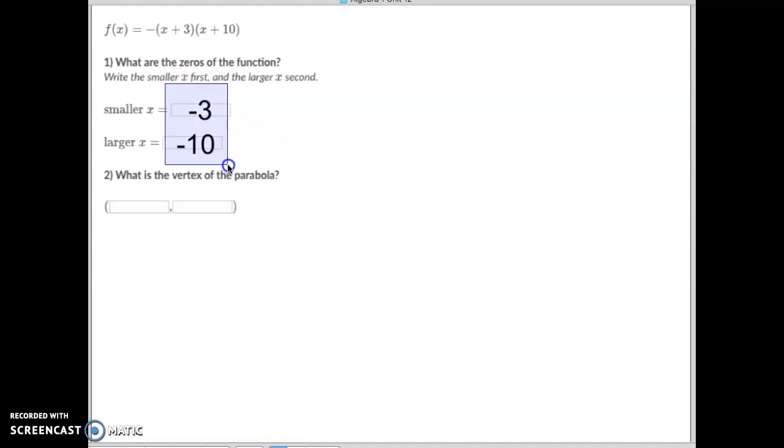By the way, if you look at this, I put those in incorrectly. It should have been negative 10 for the smaller and negative 3 for the larger. So I apologize if you ever get this problem, make sure you put them in the correct order. Now, from here, negative 3 plus negative 10 is negative 13, half of negative 13 is negative 6.5.